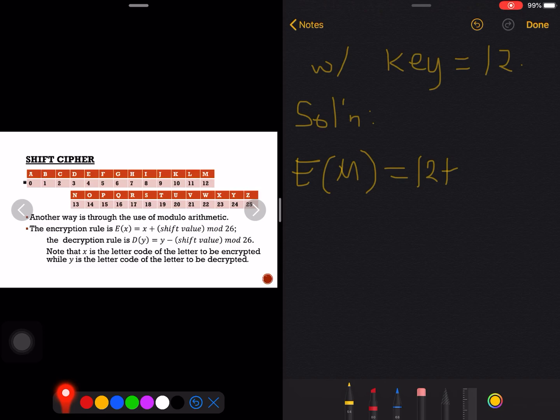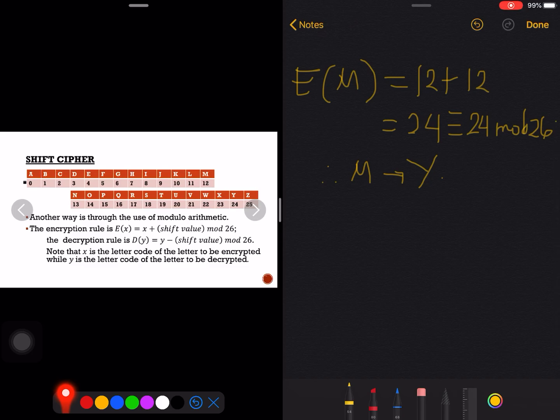So this would be 12 plus the shift value. The shift value that we have here, which is given or decided at hand, we have 12, so that's 12, and the answer here is 24. Whatever the sum is, we are to apply modulo 26. So what is 24 modulo 26? 24 modulo 26 is still 24. Therefore M becomes what letter here? 24 would be Y there.